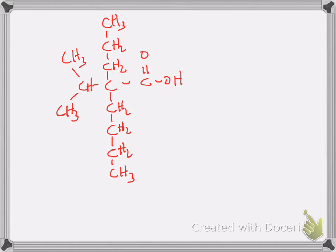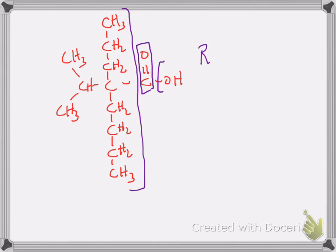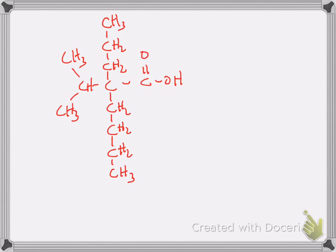I see a carboxyl group right here, and attached to that carboxyl group I have an OH on one side and on the other side a very large R group. The general structure of this molecule is R-C(=O)-OH, which is a carboxylic acid. So I'm going to name this molecule as a carboxylic acid, meaning the suffix of the name is going to be 'oic acid.'